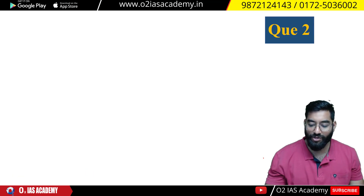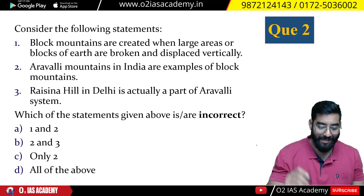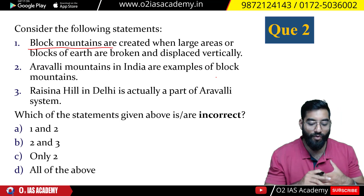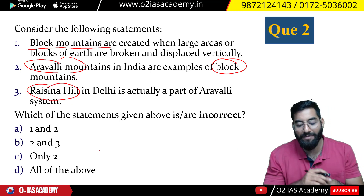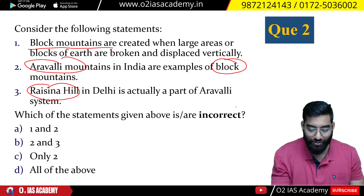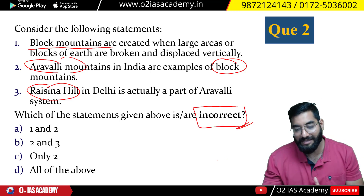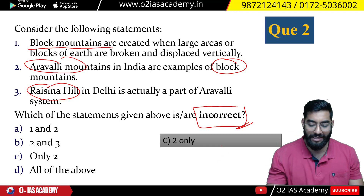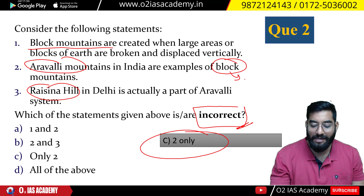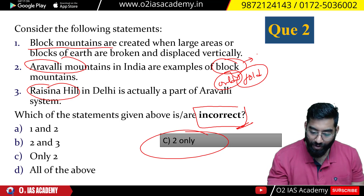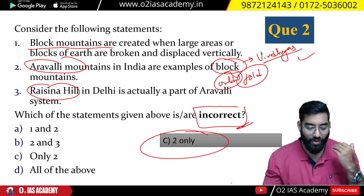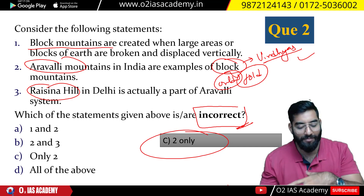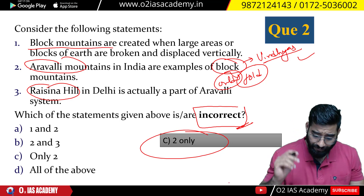Coming to the next question. Question 2: Consider the following statements — block mountains are created when big blocks are displaced vertically; Aravali is an example of block mountains in India; and the Raisina Hill in Delhi is part of the Aravali system. Which statement is incorrect? The answer is: Aravali is not a block mountain — it is basically an old fold mountain system. The block mountain example in India is the Vindhyas. The other two statements are correct: the Aravali mountains include Raisina Hill, where you can find North Block and South Block.